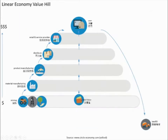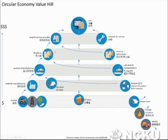This is also based on the butterfly diagram, but here it's called the value hill. We take things from nature — they don't have much economic value at that point — but by processing them into products and bringing them to the store and then to the user, the product reaches its highest value. That's the top of the value hill.